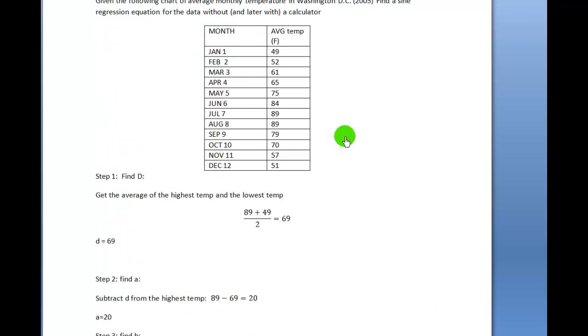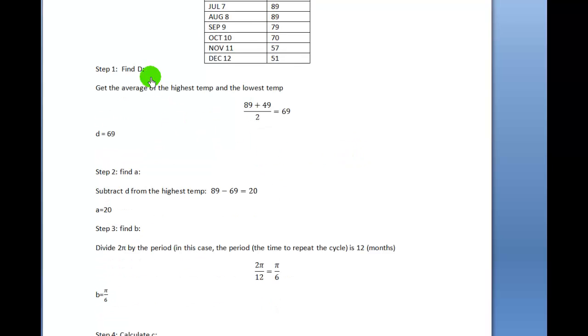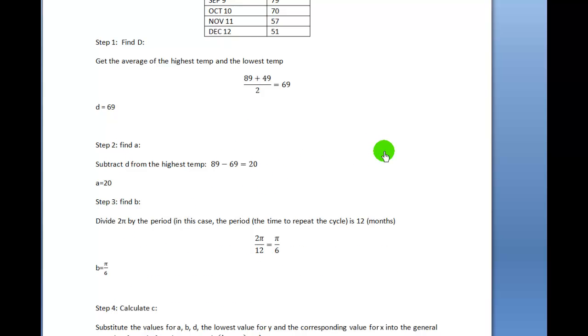Once we know D and a, the next thing we have to do is find B. We're going to divide 2π by the period. In this case the period is 12 months, so 2π divided by 12 simplifies to π over 6. So B equals π over 6.